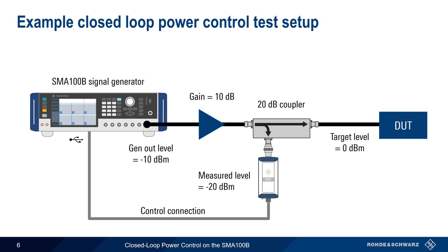This sensor sends the measured level at the coupled port to the generator. By configuring the SMA with the characteristics of the coupler and any additional offset needed to account for cable loss, etc., the SMA can then dynamically adjust output power to keep the DUT input power stable at 0 dBm. For example, if the amplifier gain were to drop to only 9 dB, the measured sensor level would drop to minus 21 dBm, and the power at the DUT would drop to minus 1 dBm. Based on feedback from the sensor, the generator power would then be increased to minus 9 dBm, and this would return the power at the DUT input to the target value of 0 dBm. This adjustment happens automatically, and the correction typically takes only tens of milliseconds.